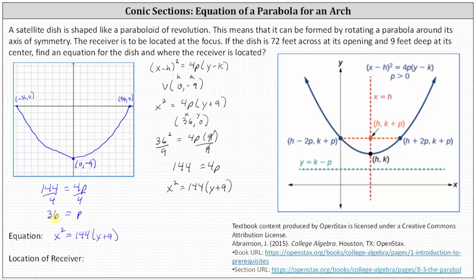And because our parabola opens up, this indicates the location of the receiver or the focus is going to be 36 feet above the vertex. If we wanted to find the actual ordered pair, we would have to add 36 to the y-coordinate of the vertex.